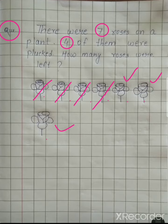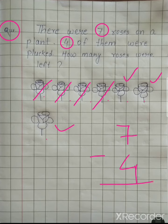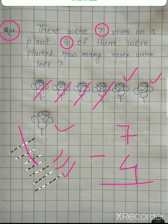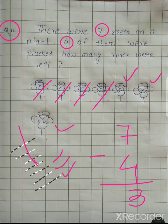Seven. First, seven roses on a plant. How many were plucked? Four. So seven minus four. We draw seven lines: one, two, three, four, five, six, seven. Four of them were plucked, so we cut four lines: one, two, three, four. Now how many lines are left? One, two, three. The answer is three — three roses were left.